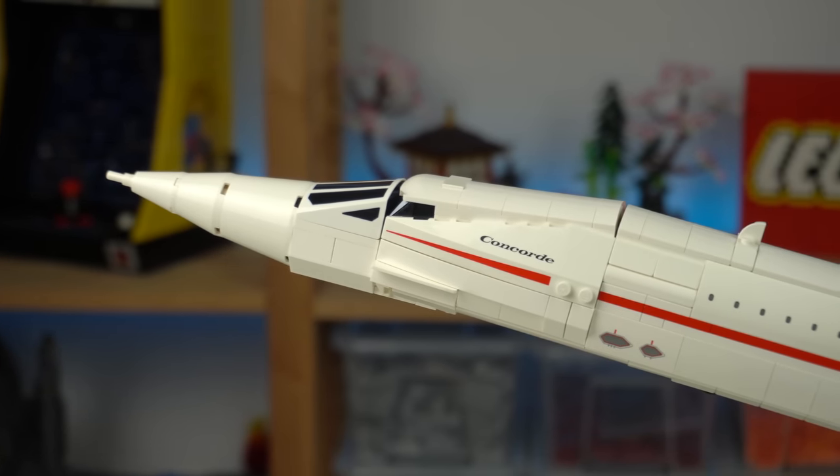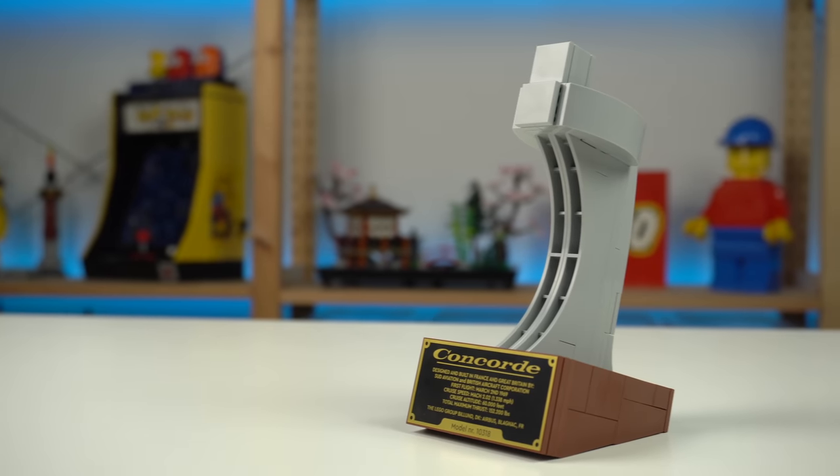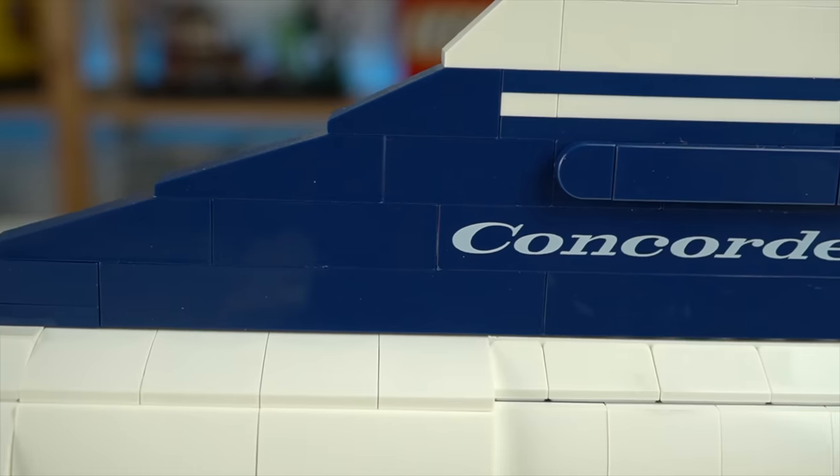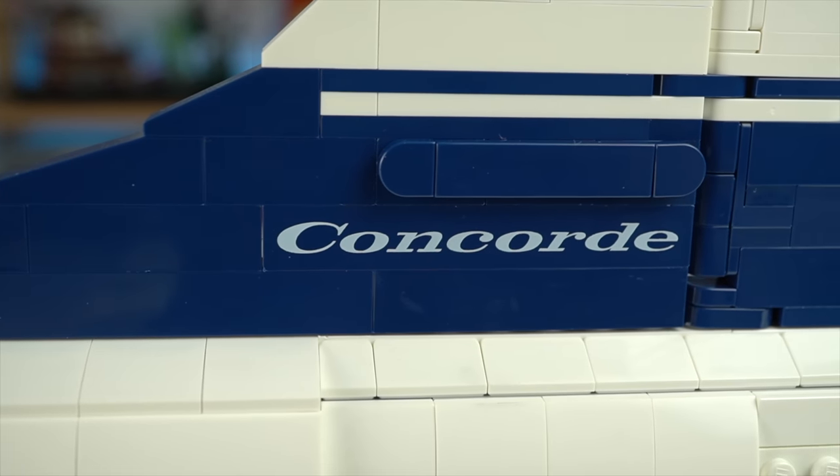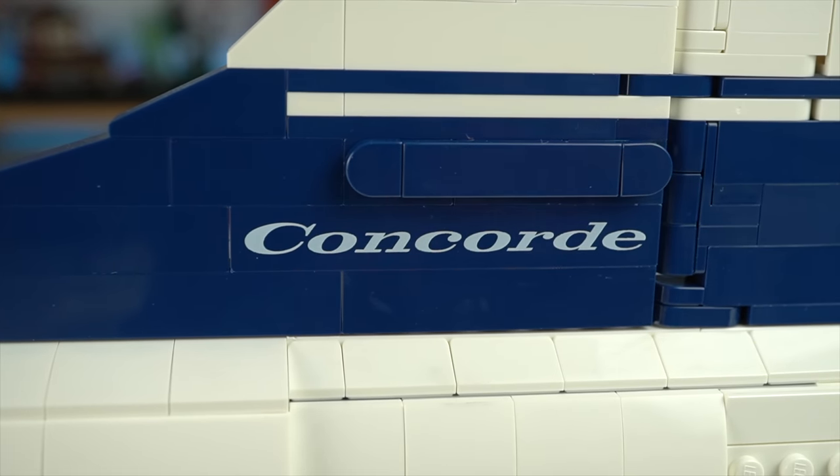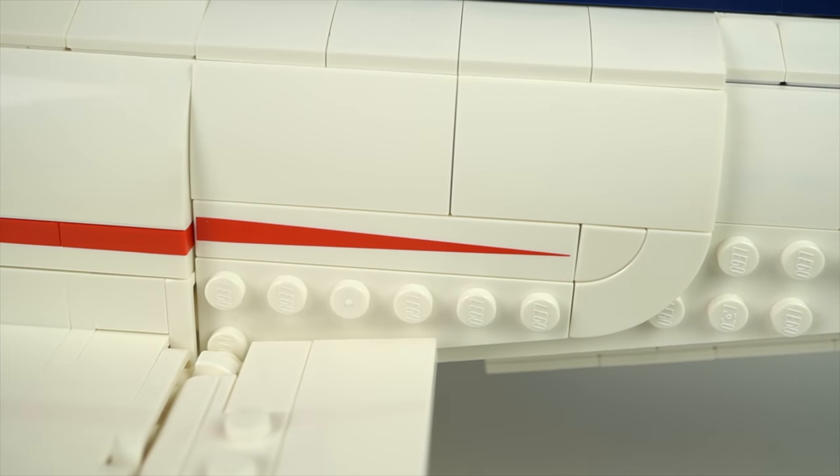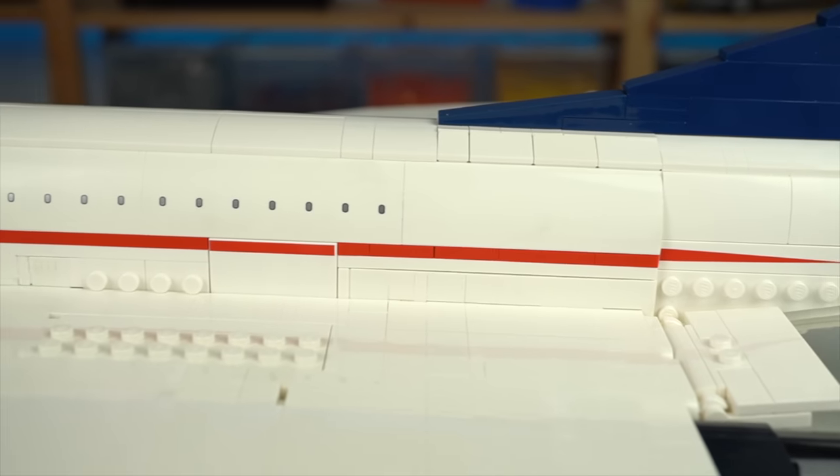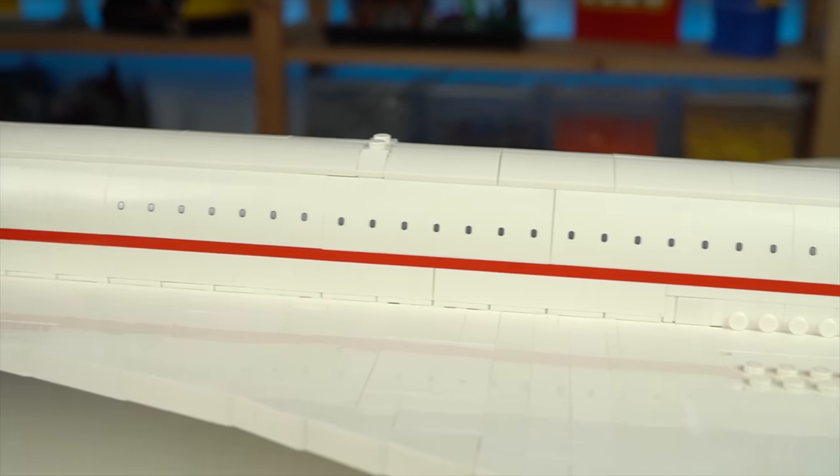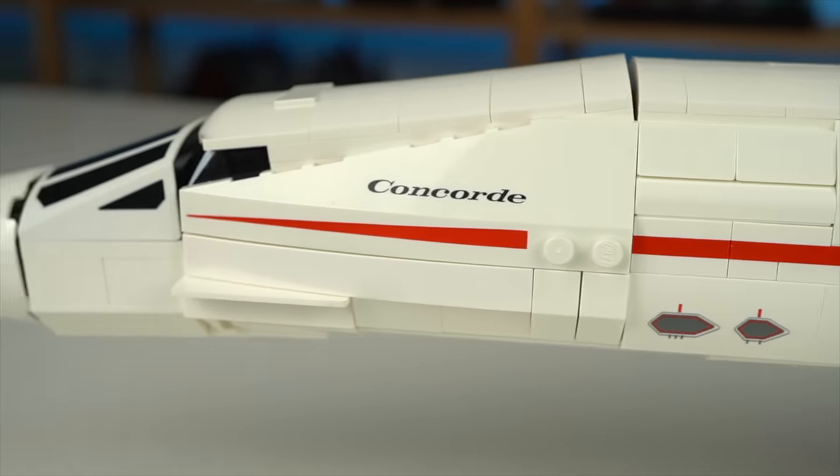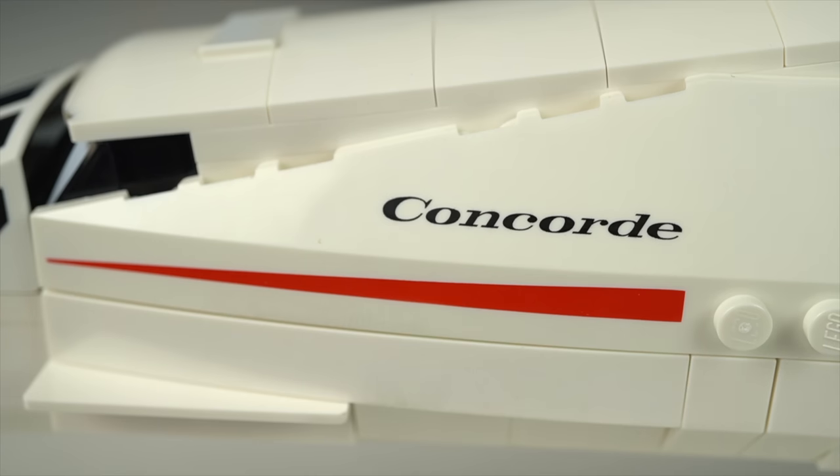First of all there's only printed elements, no stickers whatsoever so that's a huge win. At the fin there's a brick with the aircraft's name printed on both sides. On the rear fuselage this printed tile that matches the brick built red stripe leading up to another printed 2x4 tile. The line continues leading up to yet another printed element that ends the red stripe but also has the airship's name.